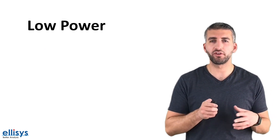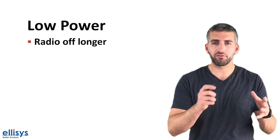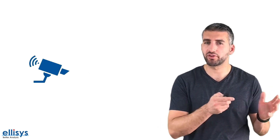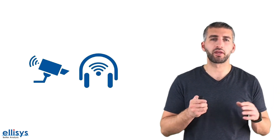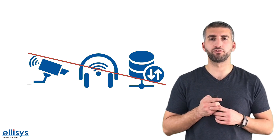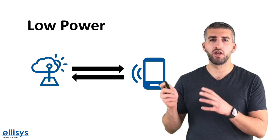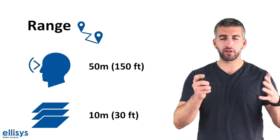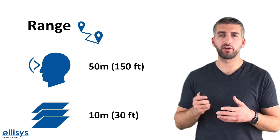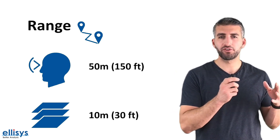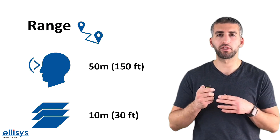BLE achieves its optimized low power consumption by turning off the radio as much as possible and sending small amounts of data over low transfer speeds. Applications such as video streaming, high-quality audio streaming, or transferring large amounts of data are not suitable for BLE. Rather, it's meant for transferring data from small devices such as sensors to a smartphone. In terms of range, BLE typically goes up to 50 meters or about 150 feet line of sight. When obstacles and walls are present, the range can go down significantly to several meters or even several feet.